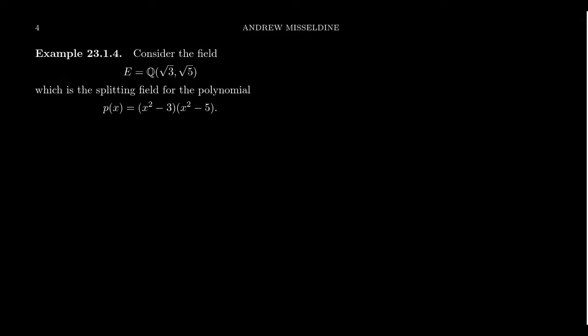Notice that E is in fact the splitting field for the polynomial P(x), which is (x² - 3)(x² - 5). If we view this as a rational polynomial, we get that x² - 3 and x² - 5 are, in fact, irreducible polynomials.